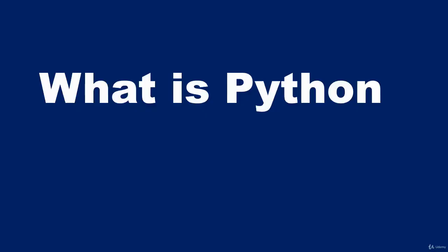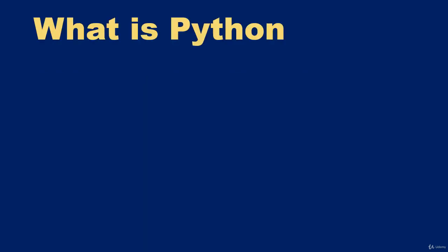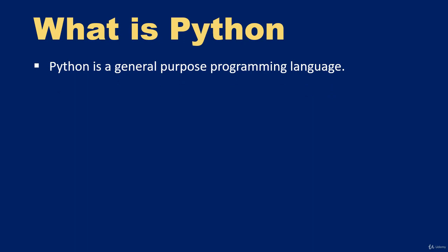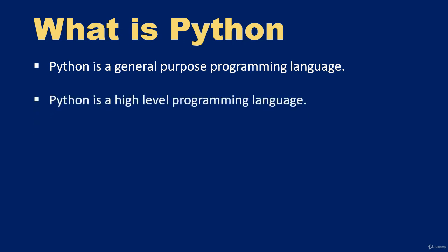Welcome to this video on what is Python. Python is a general purpose programming language, meaning it can be used to write programs for various things like games, data science, websites, and more. Python is also a high-level programming language, meaning instructions are written in a way that is easily understandable and close to human language.